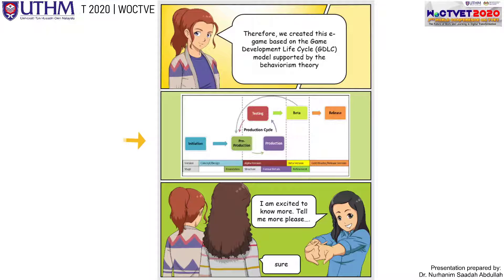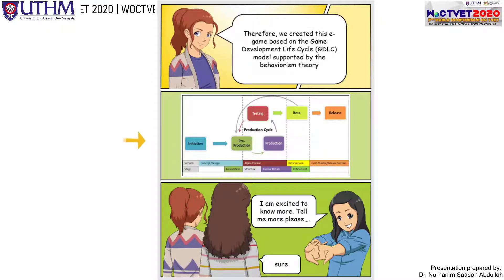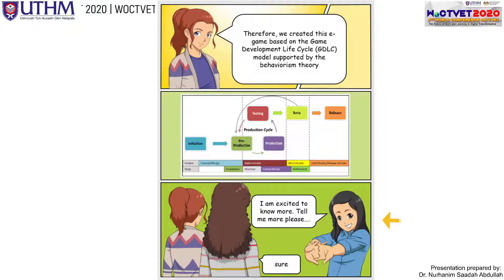The GDLC model has several stages: first is initiation, then pre-production, then production, testing, making the beta version, and then release. The production cycle combines testing, pre-production, and production phases. I'm so excited to know more — tell me more!